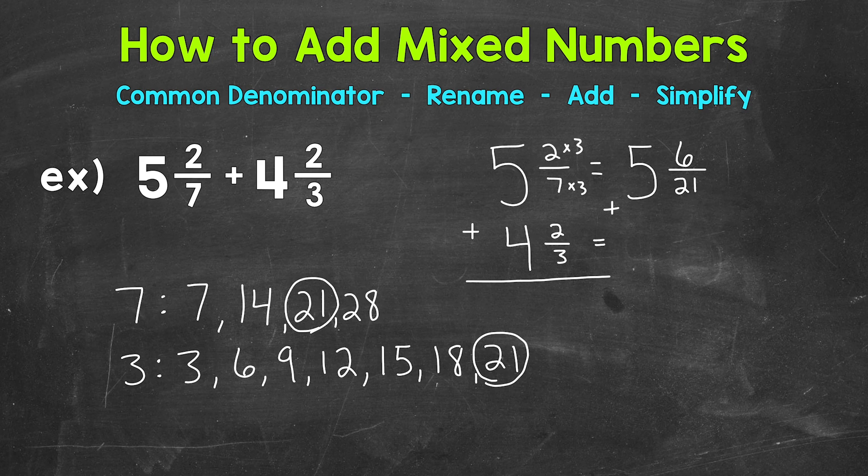And then we need to do 4 and 2 thirds. Again, we do not need to do anything with the whole number, and we have a common denominator of 21. So let's think, how do we get 3 to equal 21? Well, 3 times 7 is 21. Whatever we do to the bottom, we must do to the top in order to keep this equivalent. So 2 times 7 is 14.